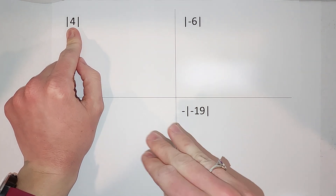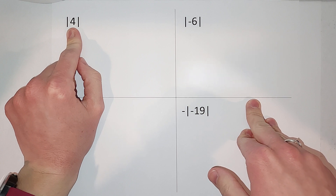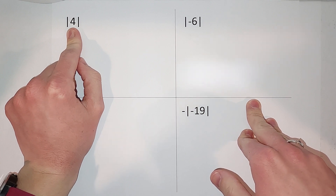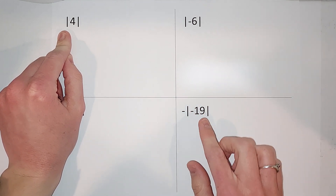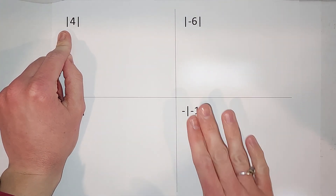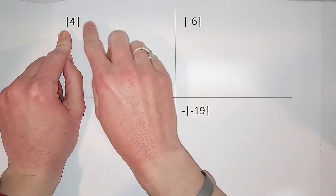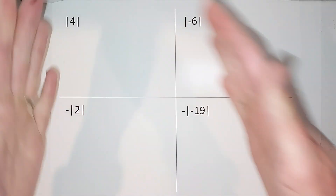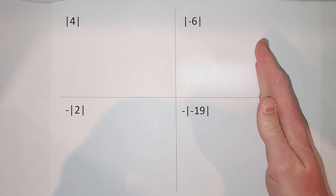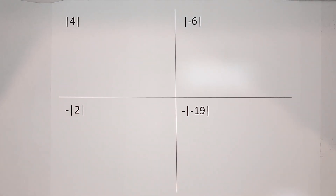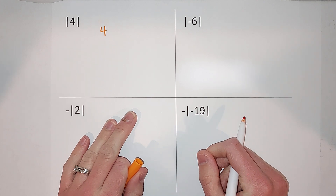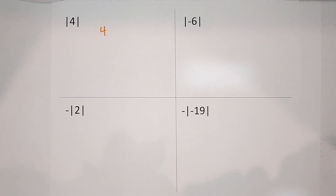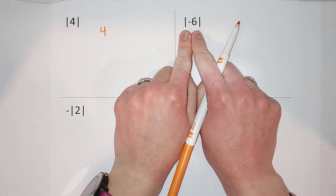Because it is a distance, the answer is always positive. It is asking on a number line: how far is four from zero? How many units? My answer is four. That's it — was that easy?